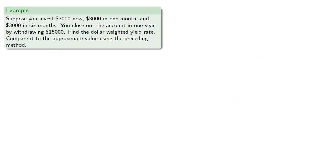For example, suppose you invest $3,000 now, $3,000 in one month, and $3,000 in six months. You close out the account in one year by withdrawing $15,000. Find the dollar-weighted yield rate and compare it to the approximate value using the preceding method.